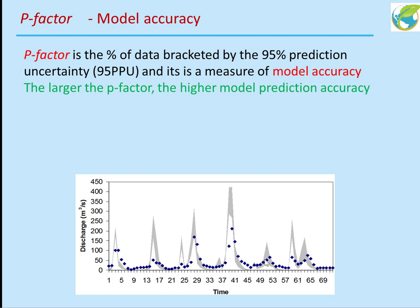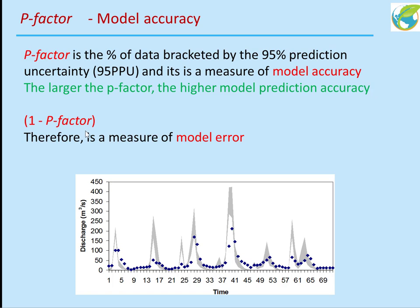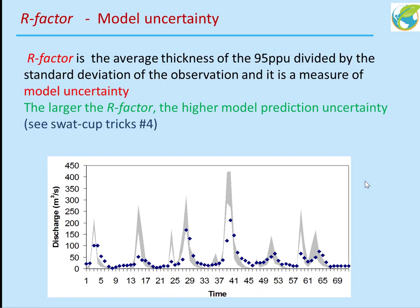Those are the observations which have been simulated well by our model. The points outside the 95% PPU are described as one minus P-factor, which is a measure of model error — the points which have not been simulated by our model. The other factor is R-factor, which represents model uncertainty.